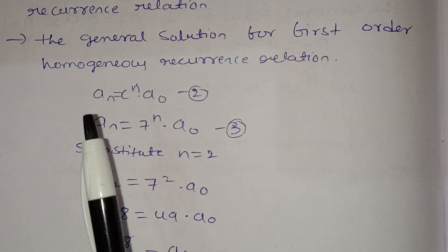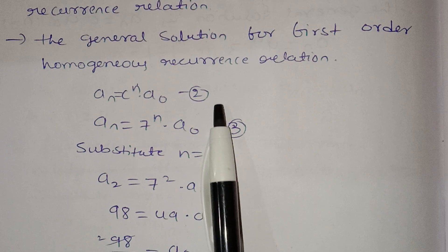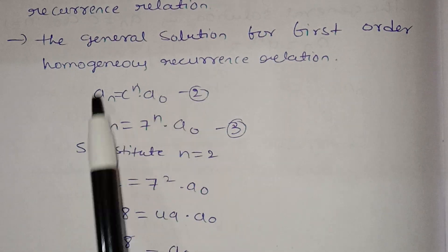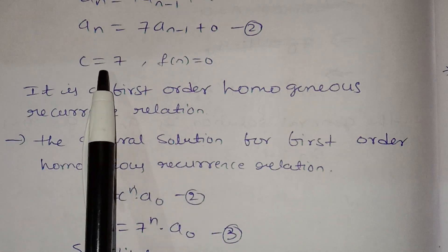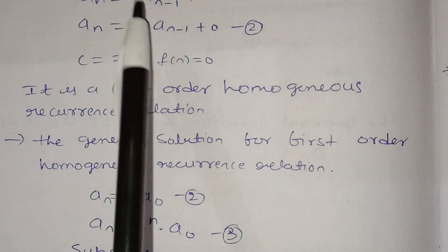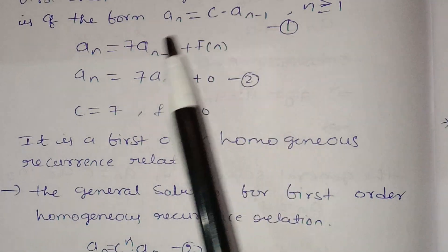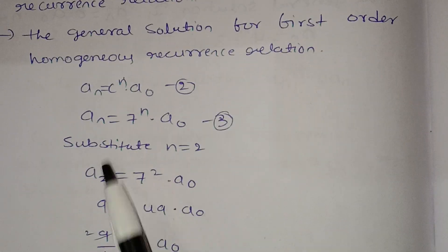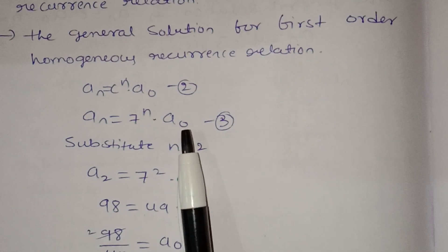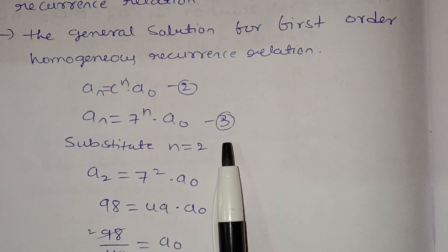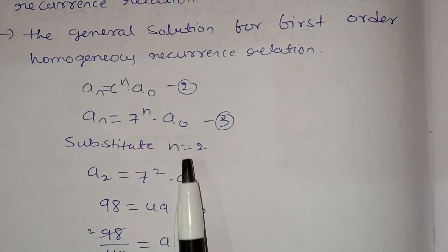The general solution of a first order homogeneous recurrence relation is aₙ equals cⁿ·a₀. This is the general solution. Here c equals 7, so aₙ equals 7ⁿ·a₀.